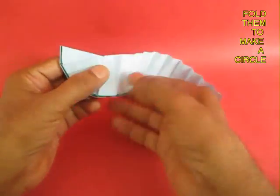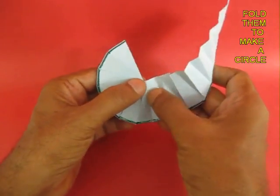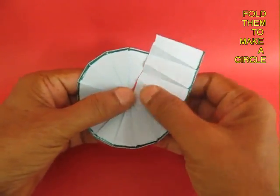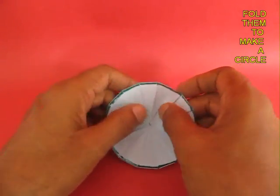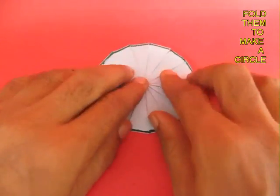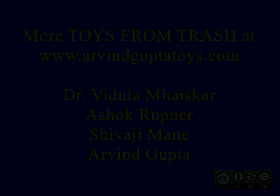The length of the strip actually becomes the circumference of the circle. So here is a fun way of folding a circle using a rectangular strip of paper.